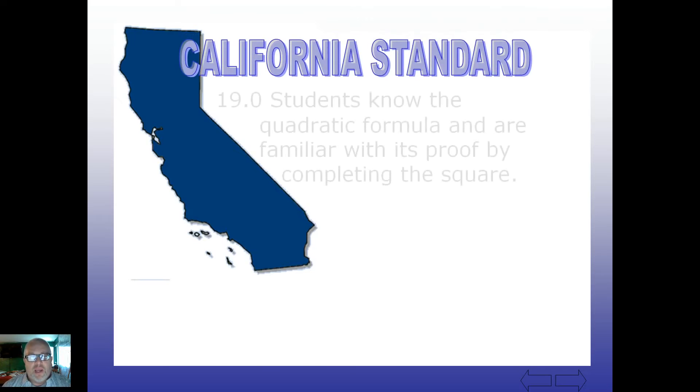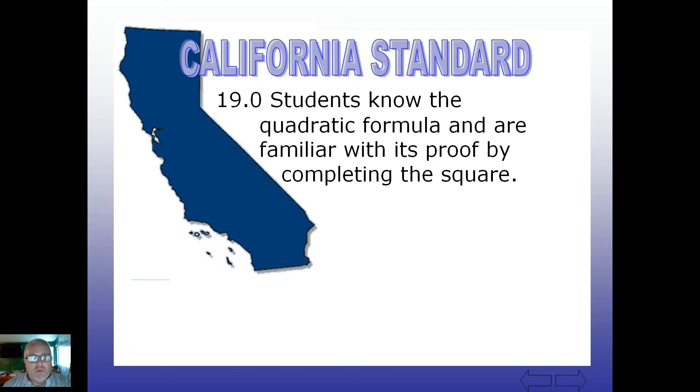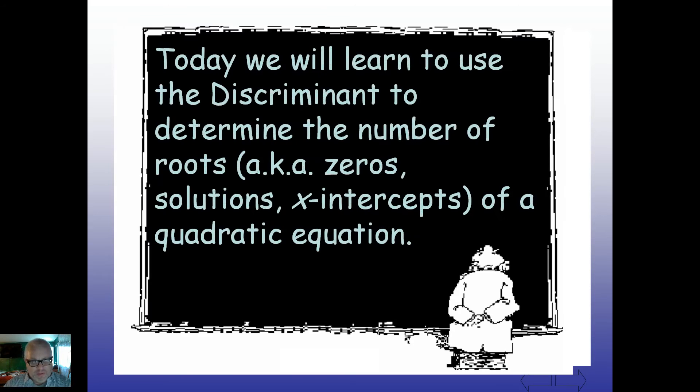Alright, we are here in our standard of still 19.0, getting closer to that proof by completing the square, but we'll get there. And let's move to today's work. We will learn to use the discriminant to determine the number of roots, also known as zeros or solutions or x-intercepts, of a quadratic equation.